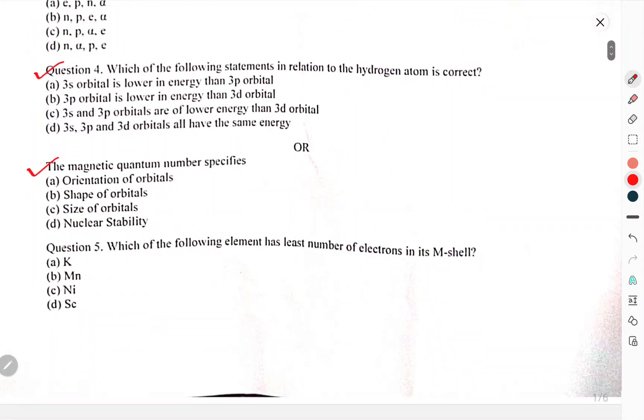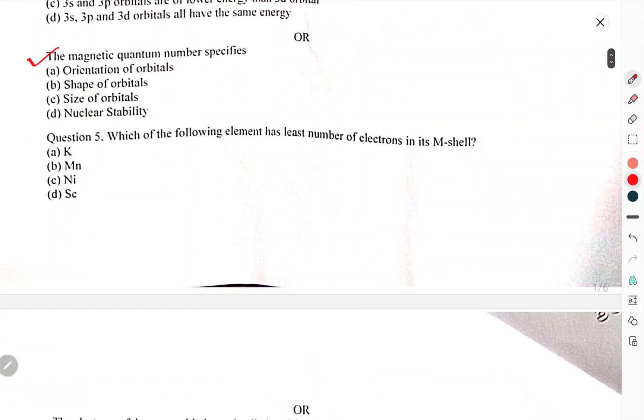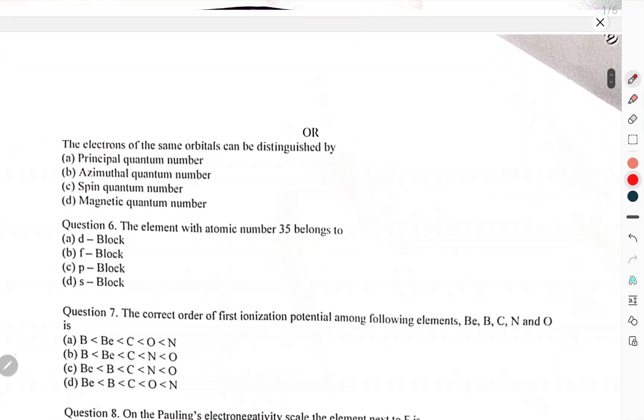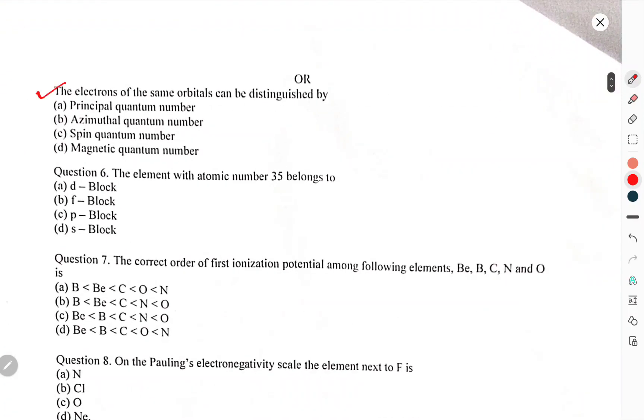The magnetic quantum number specifies? Which of the following element has the least number of electrons in its M-shell? Electrons of the same orbital can be distinguished by?